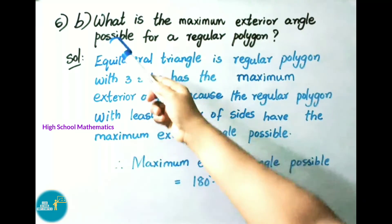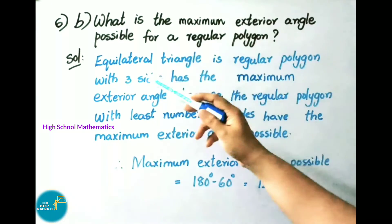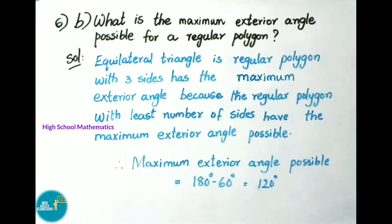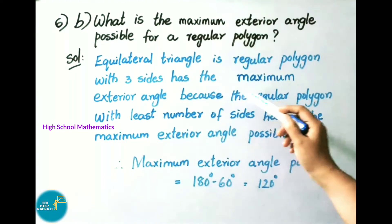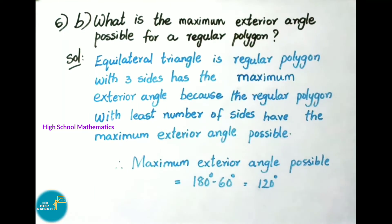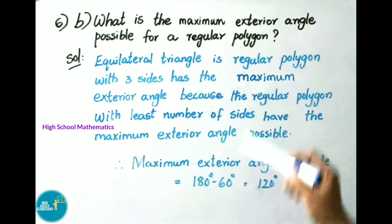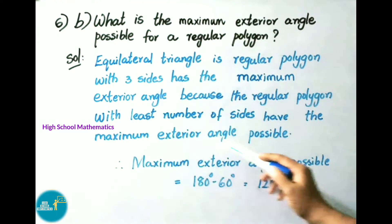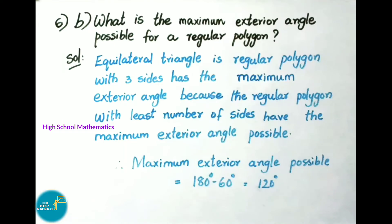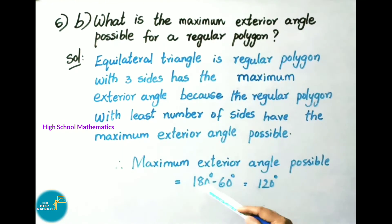Question 6B: what is the maximum exterior angle possible for a regular polygon? An equilateral triangle, having the least number of sides, has the maximum exterior angle. The maximum exterior angle equals 180 minus 60 equals 120 degrees. Therefore the maximum exterior angle possible is 120 degrees.